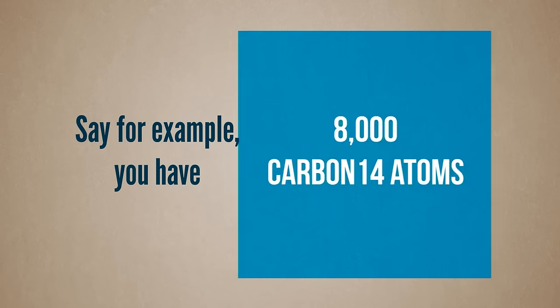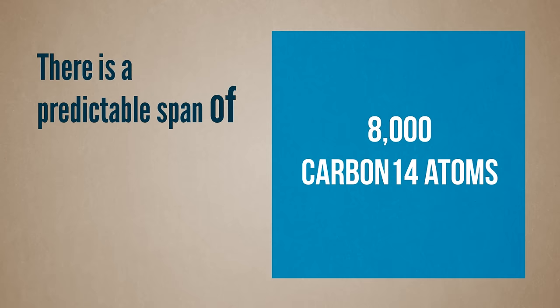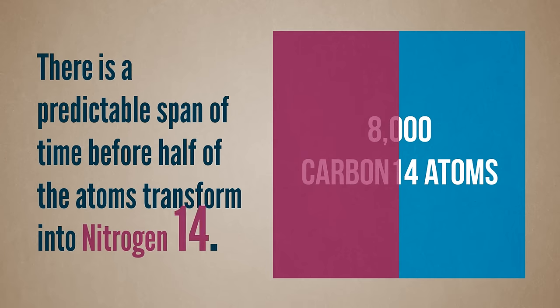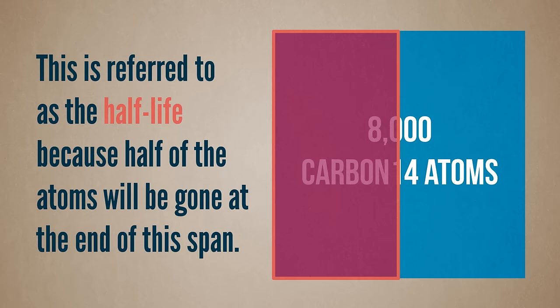Say, for example, you have 8,000 carbon 14 atoms. Well, there is a predictable span of time before half of the atoms transform into nitrogen 14. This is referred to as the half-life because half of the atoms will be gone at the end of this span.